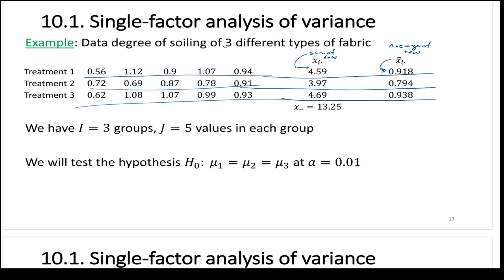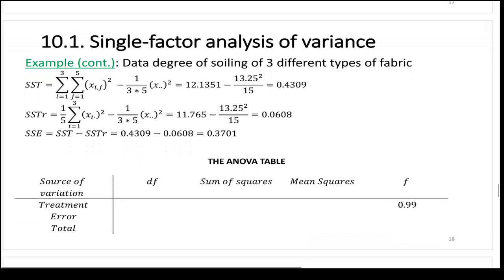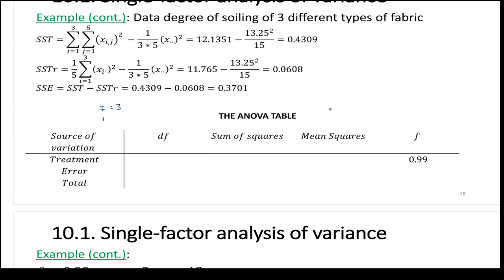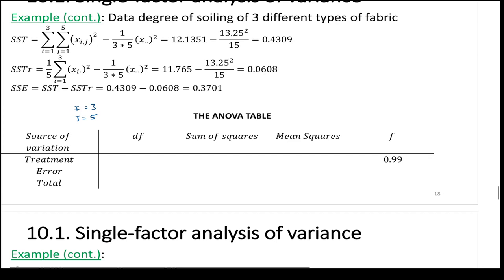The grand total x-dot-dot is the sum of all data points. We have I equals 3 groups and J equals 5 values each. Testing whether means are the same at alpha equals 0.01. Degrees of freedom: for treatment, I minus 1 equals 2; for error, I times J minus 1 equals 3 times 4 equals 12. Total is 14. V1 equals 2, V2 equals 12.